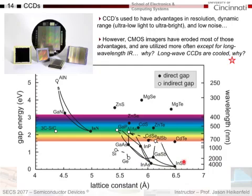So why does this give CCDs an advantage over CMOS? These devices, if you're going to do CMOS, you need to have transistors. It's very difficult with these type of semiconductors to make all the circuitry you need for a CMOS imager. So to make these work well, they have to use a simple device like the CCDs we talked about, where you just have a metal oxide semiconductor and you transport the charge out by moving a potential well. So in infrared applications, CCDs still do quite well.